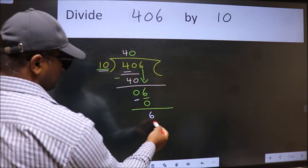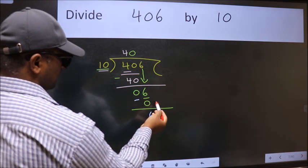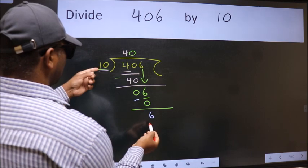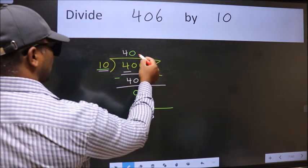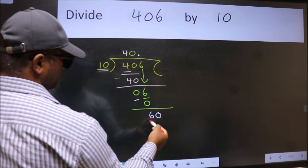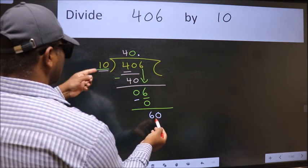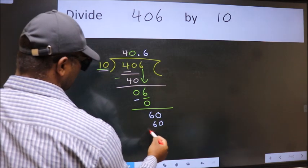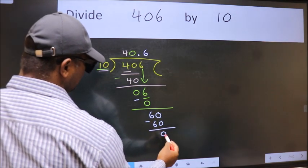We did not bring any number down here. And 6 is smaller than 10. So now we can put dot and take 0. So, 60. When do we get 60 in the 10 table? 10 times 6 is 60. Now we subtract. We get 0.